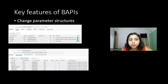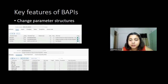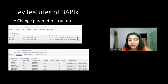The next point is the change parameter structures. Most BAPIs have these change parameter structures which correspond to the same name as the original structure. All fields in this structure have a one-character flag. For example, if there are 100 fields and the third-party system is only passing 10 fields, then the third-party programmer has to mark those 10 fields as 'X' in this change structure and pass it back to the SAP system via the BAPI or OData service.